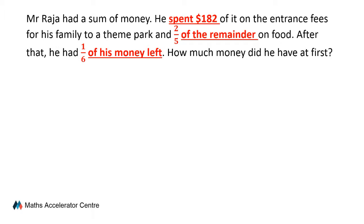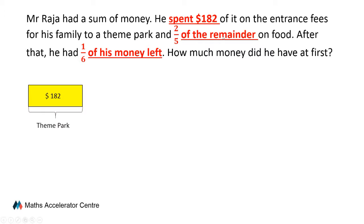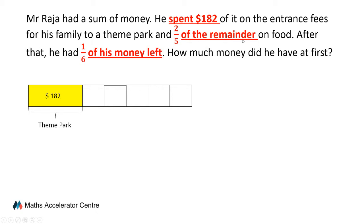After identifying all the keywords, the next thing to do is to turn these keywords into information like models. The first set of keywords tells us he spent $182 on the entrance fee to the theme park, so we draw a bar model and indicate $182 spent on the theme park. From the next set of keywords, we know that the remainder can be divided into 5 units, so we draw a model with 5 units.